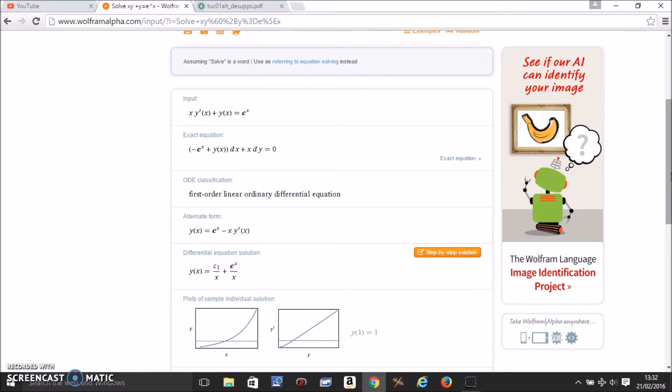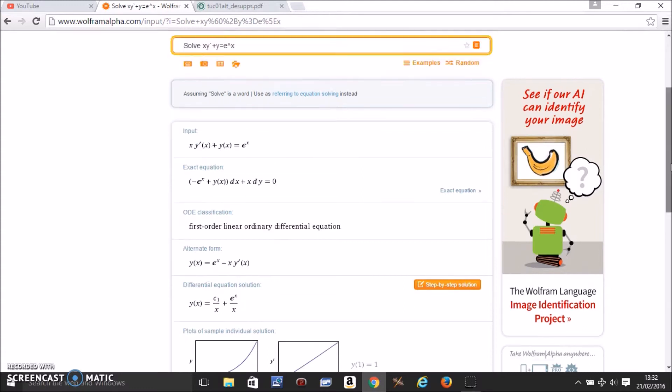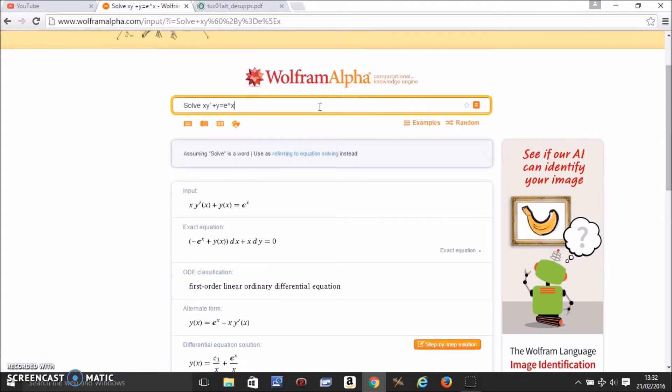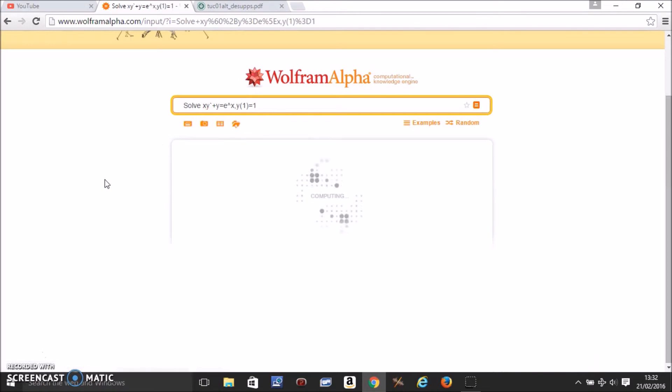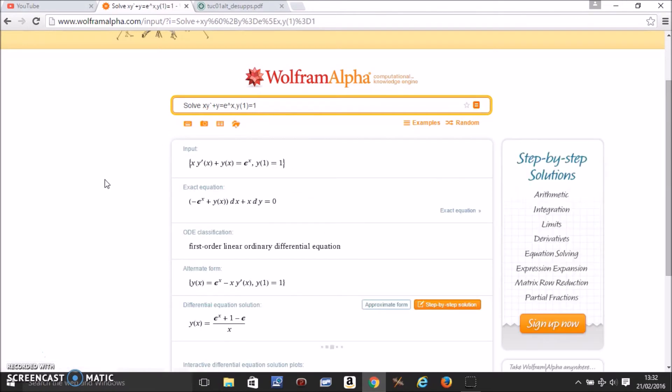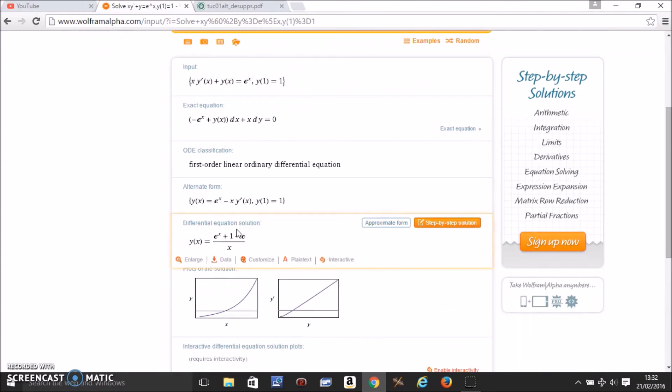Now c1 here is a constant which you can find if you had initial conditions. Say I give some initial conditions - you put initial conditions as y(1) = 1. This means when x is 1, y is 1. This is how you enter the initial conditions, and then press equal to again.